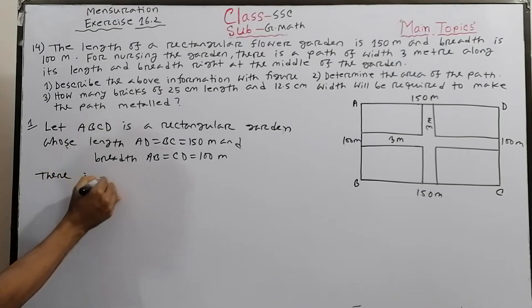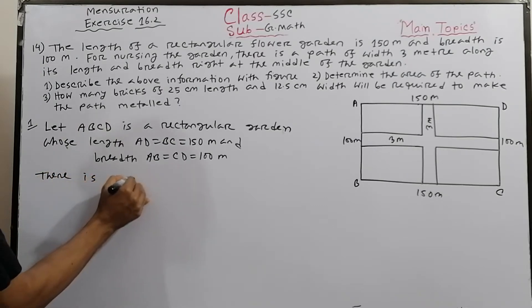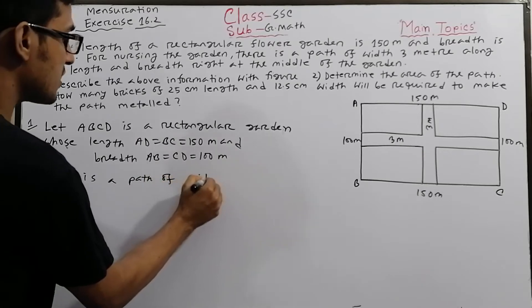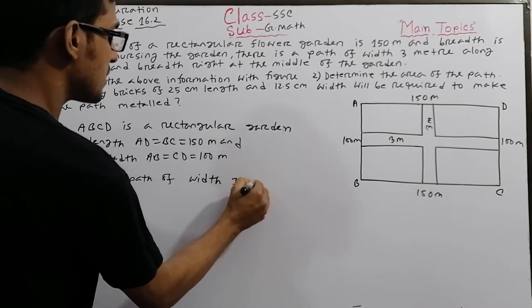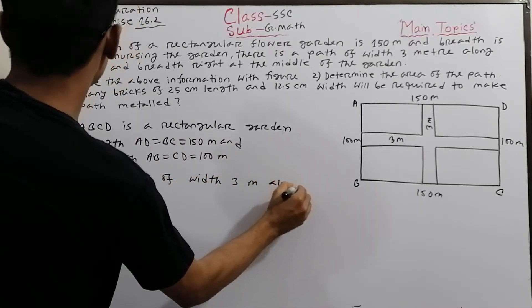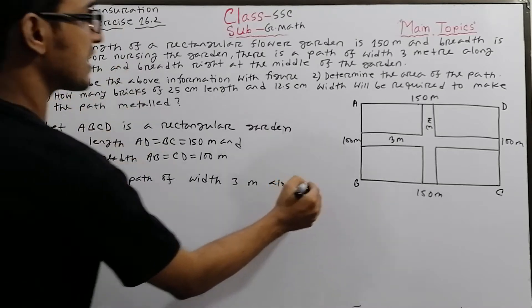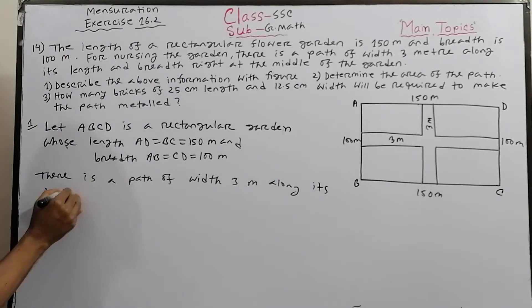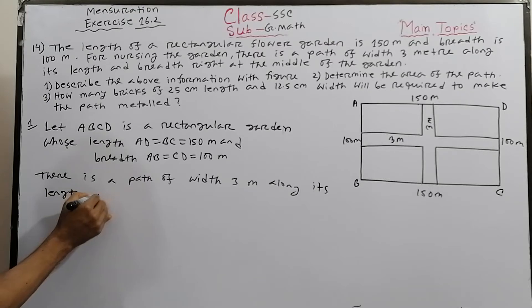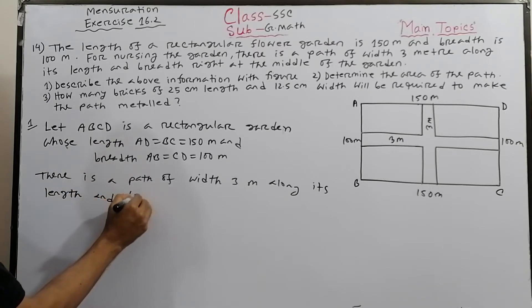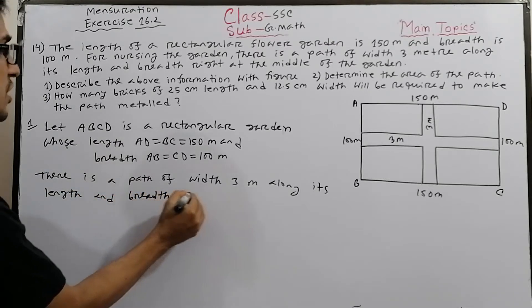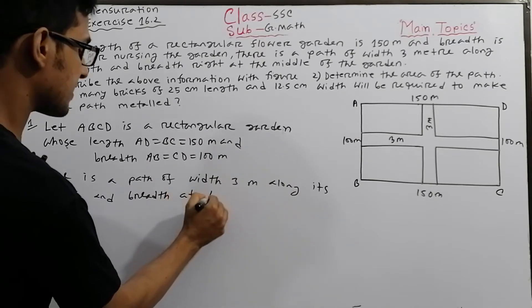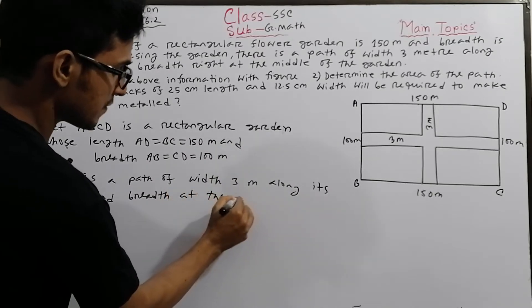There is a path of width 3 meters along its length and width at the middle of the garden.